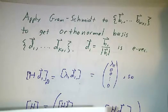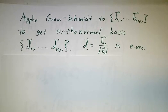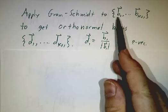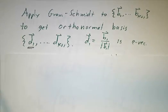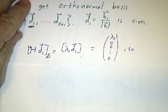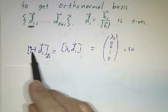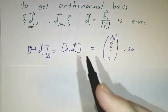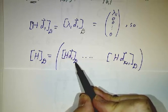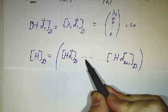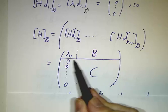Then take that basis and apply Gram-Schmidt to turn it into an orthonormal basis. Remember what Gram-Schmidt does to the very first vector — it doesn't change it except maybe to rescale it. So we wind up with an orthonormal basis where the first vector is an eigenvector and the rest probably aren't. Now we ask what the matrix of H looks like in this orthonormal basis. Applying H to d₁ gives λ₁d₁, so its coordinates are (λ₁, 0, 0, …). The first column is (λ₁, 0, 0, …), and the rest I'll write as a block: a row B and a smaller matrix C.